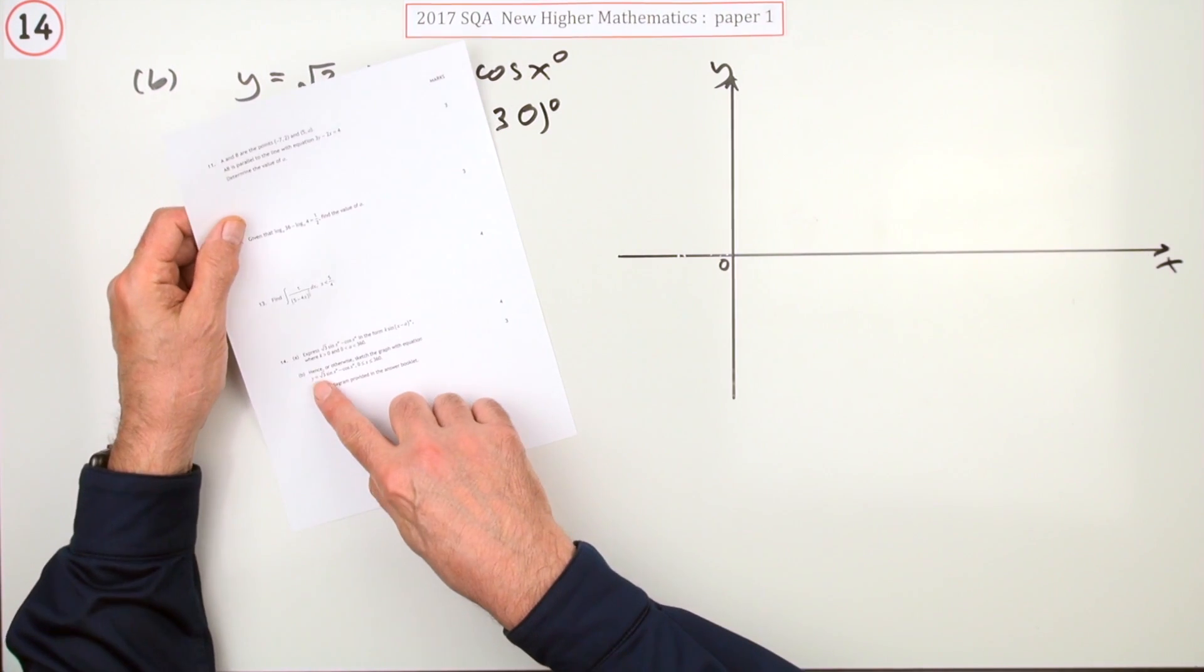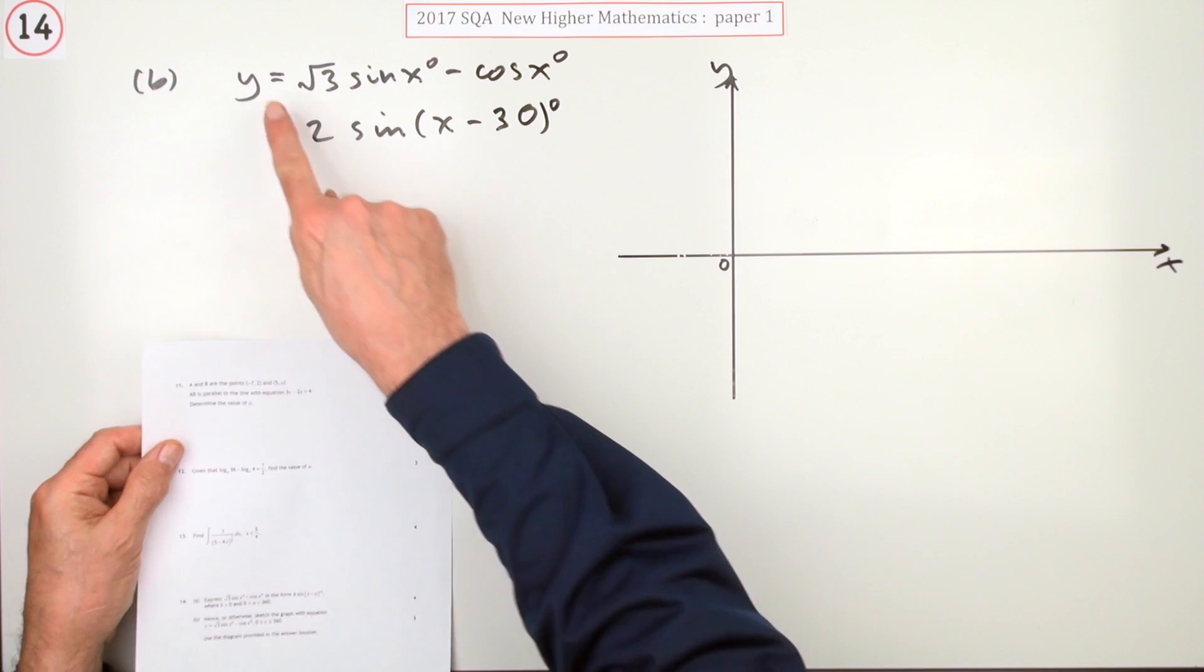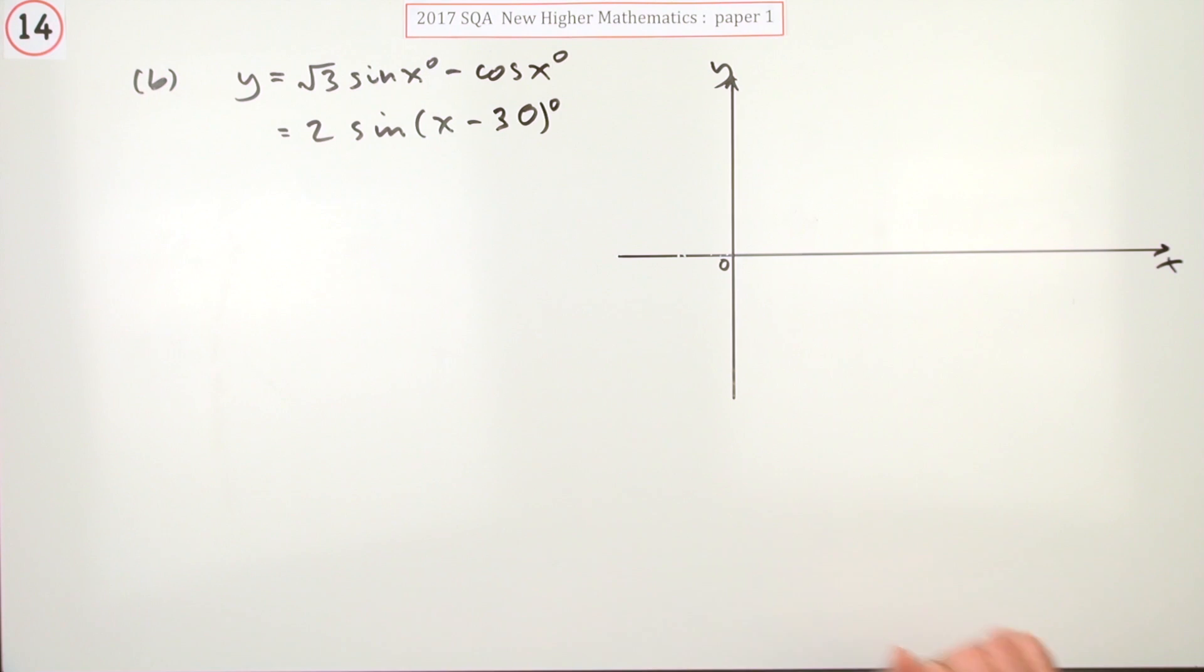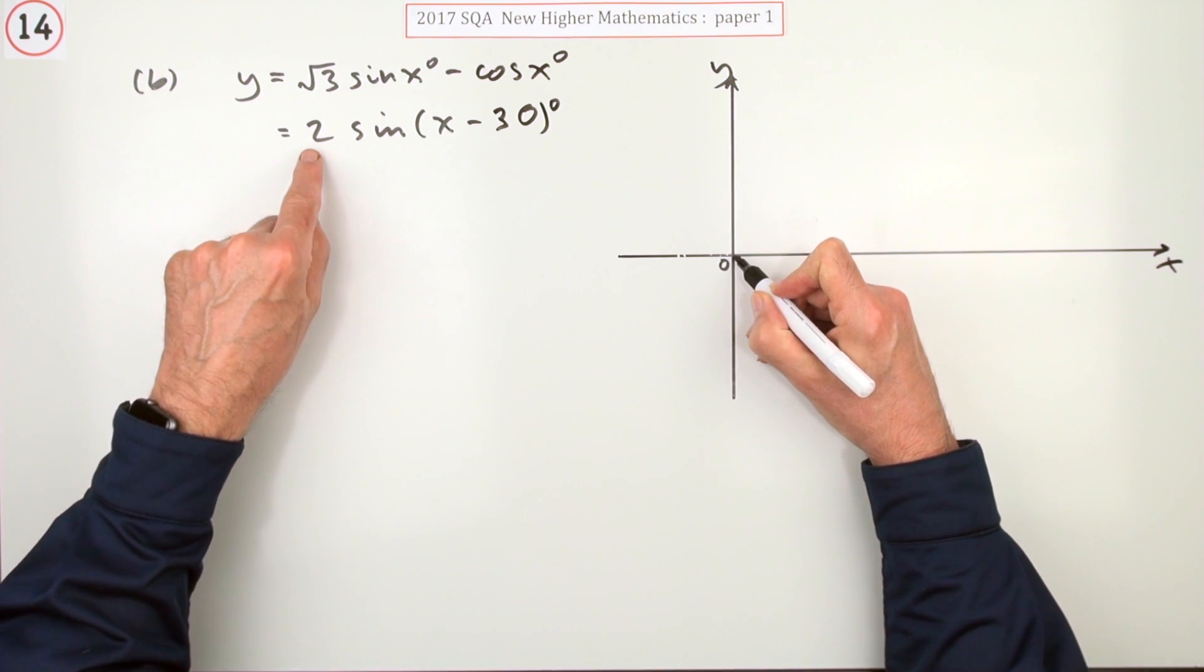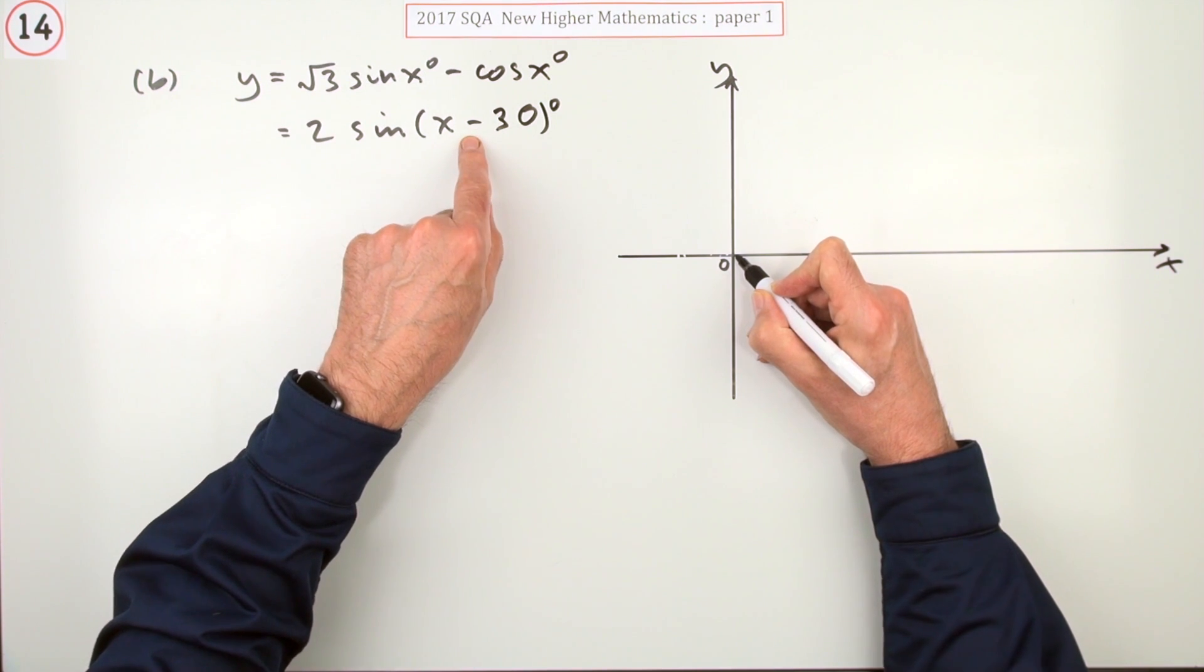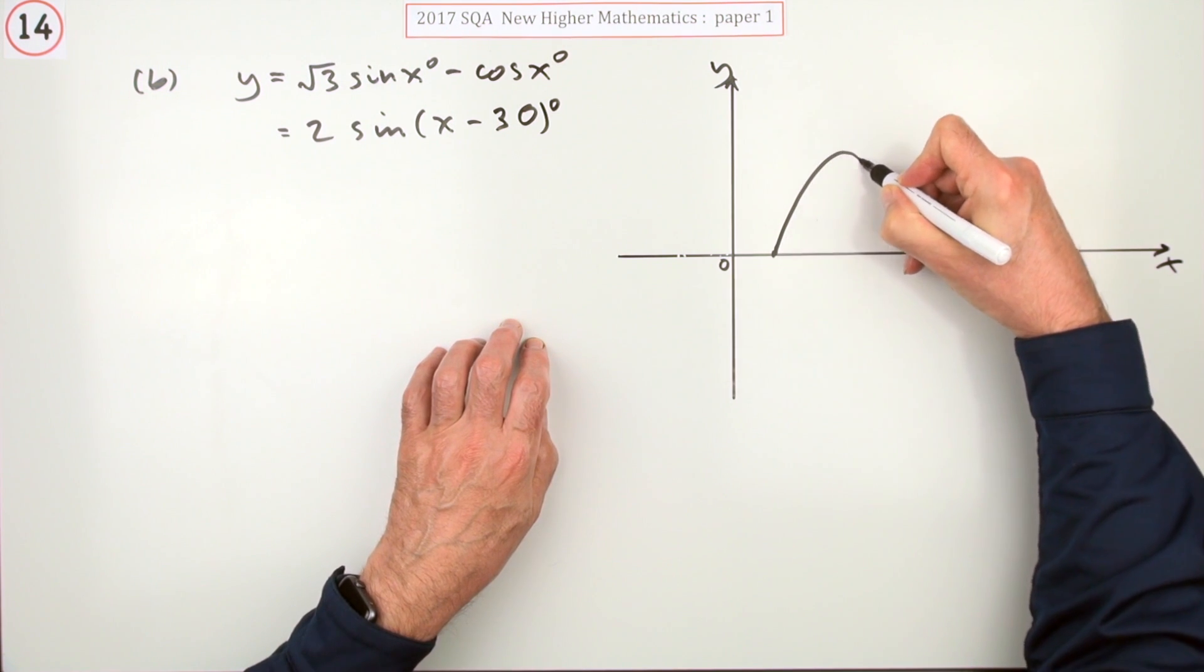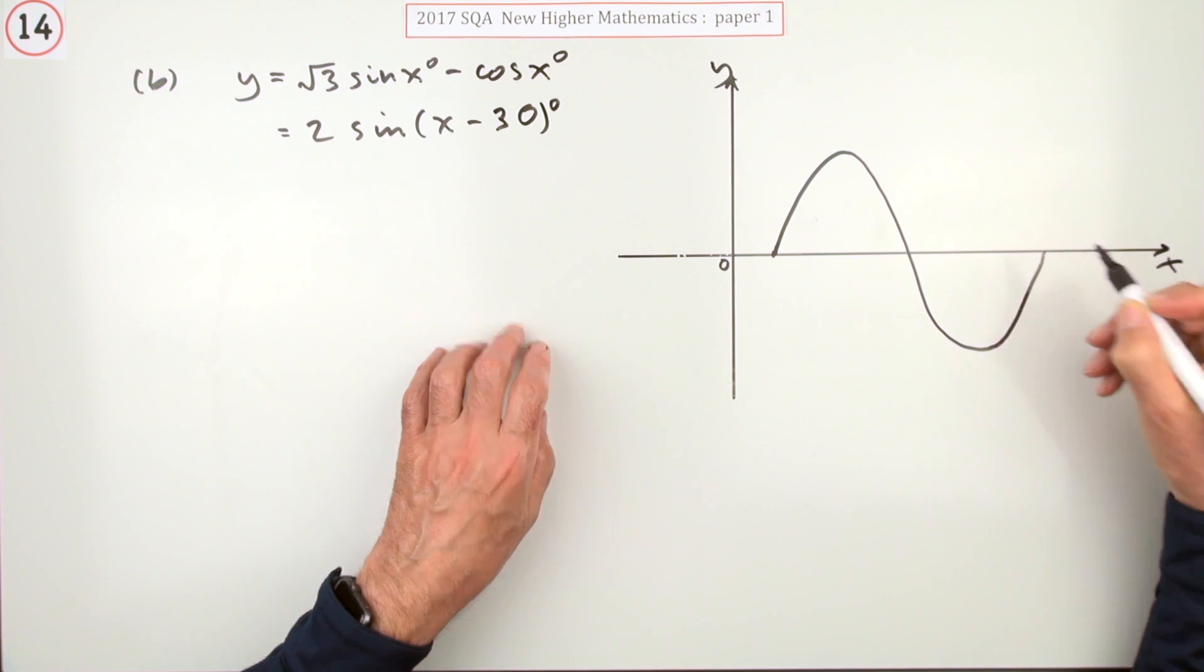So in part b then, when it says hence or otherwise sketch the graph with this equation, you're just going to sketch the graph of this one instead because it's the same thing. And it's just a sine graph which goes up and down 2 and starts, notice, minus 30 degrees forward.